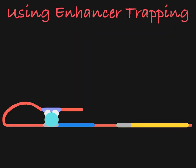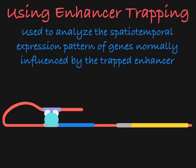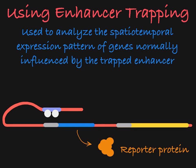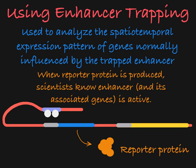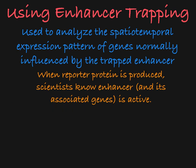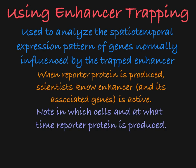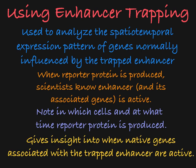How does enhancer trapping help scientists? By trapping the expression pattern of the enhancer, we can analyze the spatiotemporal expression pattern of the genes associated with that enhancer. When genes of the P element expression cassette are expressed, reporter proteins are produced, which alerts a scientist to the expression of the P element — a product of interaction with the enhancer. We can trace the pattern of expression, noting the specific cells in the organism's body that are expressing the P element genes and the times in the organism's life at which they are expressed. Tracing the P element expression pattern gives us insight into the expression pattern of the organism's genes that are naturally controlled by the trapped enhancer.